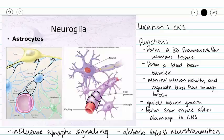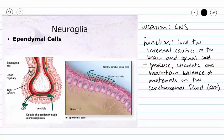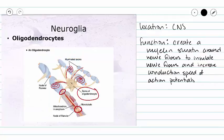So the four neuroglia in our central nervous system include astrocytes, microglia, ependymal cells, and oligodendrocytes. Now we're going to move on to our peripheral nervous system.